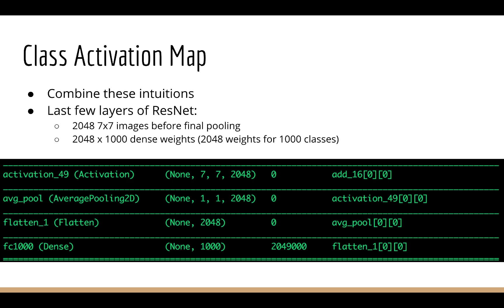Alright so to build a class activation map, we just have to combine these intuitions. Suppose we're looking at ResNet, which gives us 2048 features after the final max pool. We therefore have 2048 weights for each of the 1000 output classes. Let's take a moment to look at the model summary of ResNet so we can be sure about this.